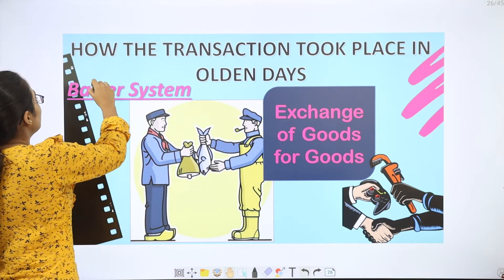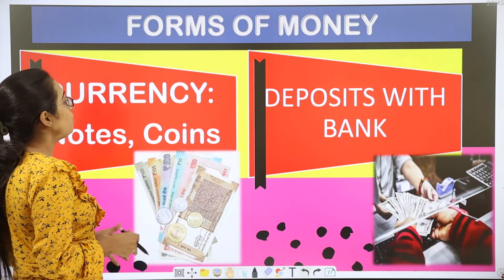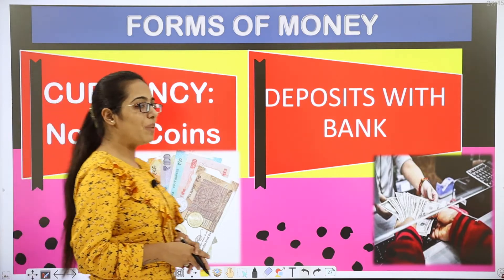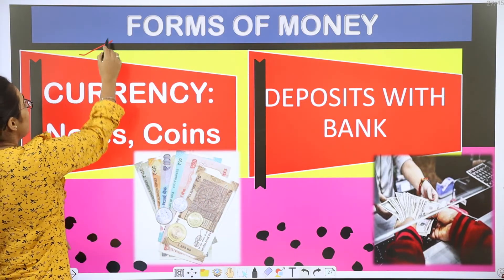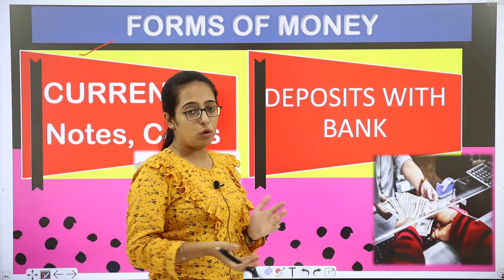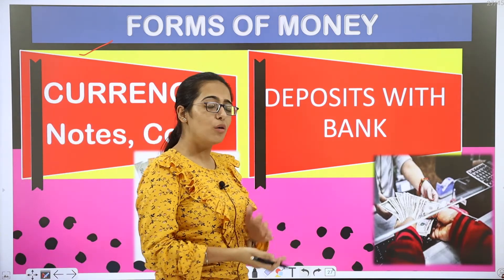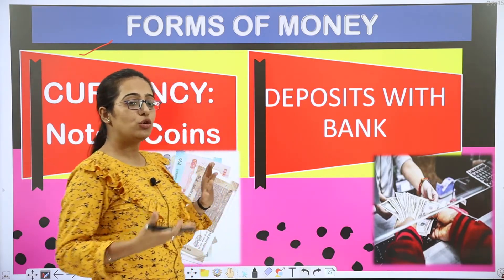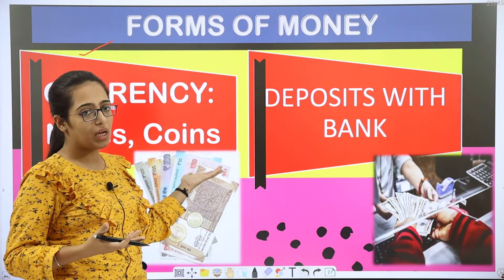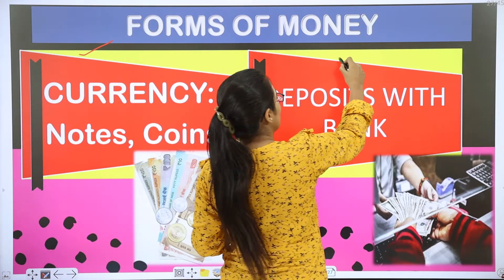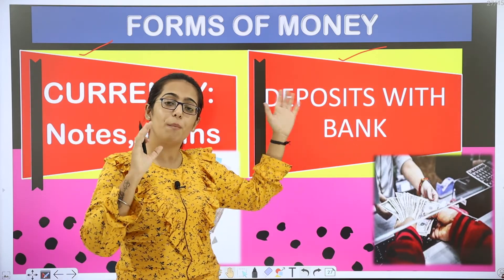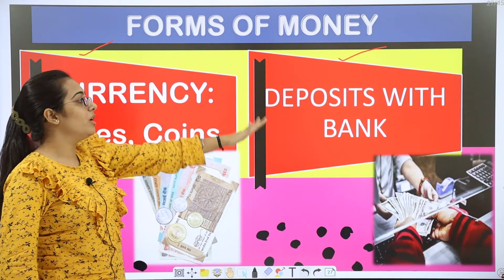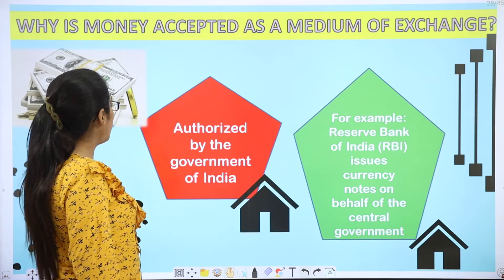Double coincidence of wants in the barter system is very important. Now, what are the forms of money? We have currency notes — the notes we normally use today, like notes of 2000, 500, one rupee, two rupee. And money deposited in banks is also a form of money — deposits with banks are also known as a form of money.